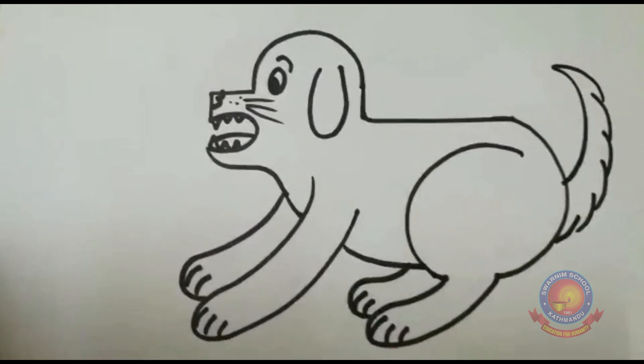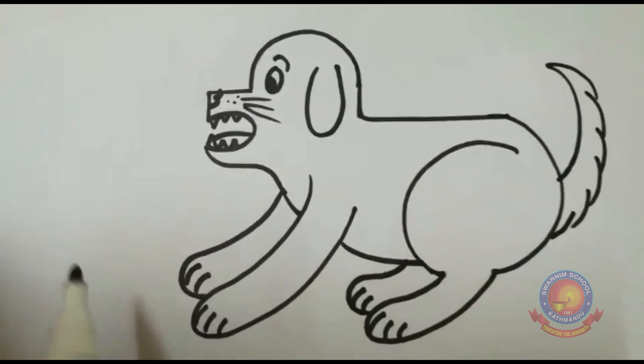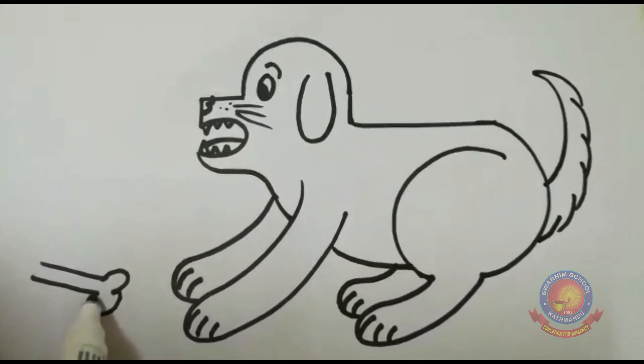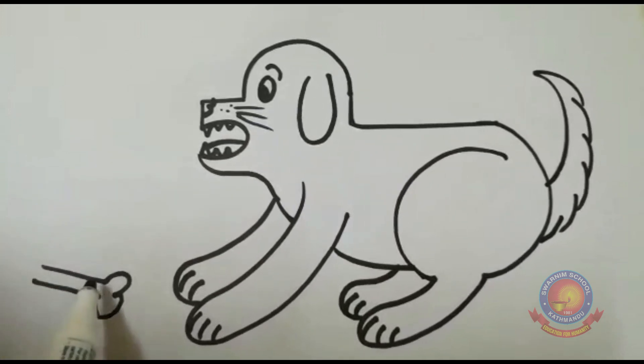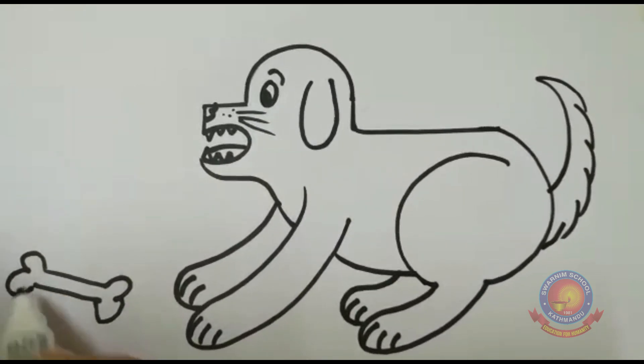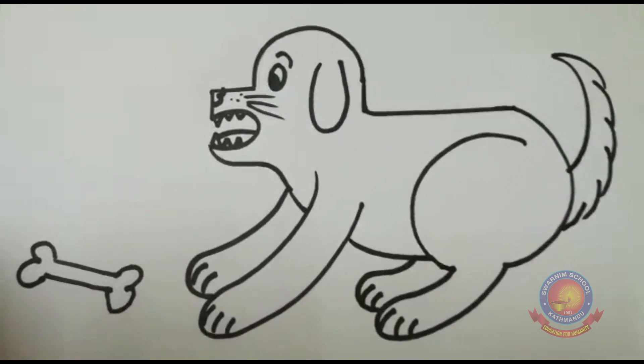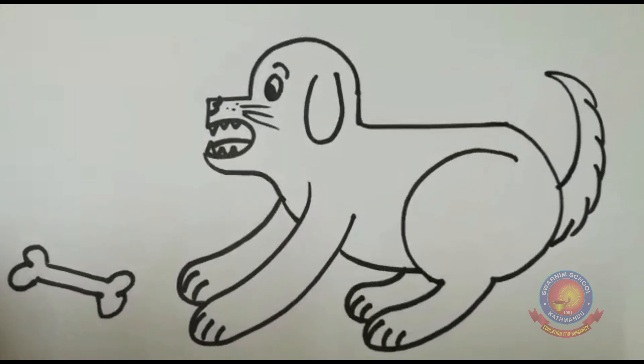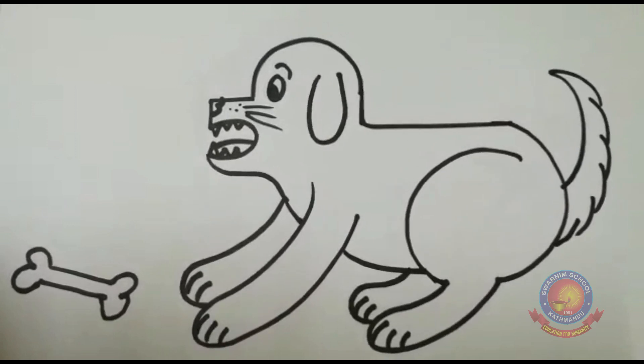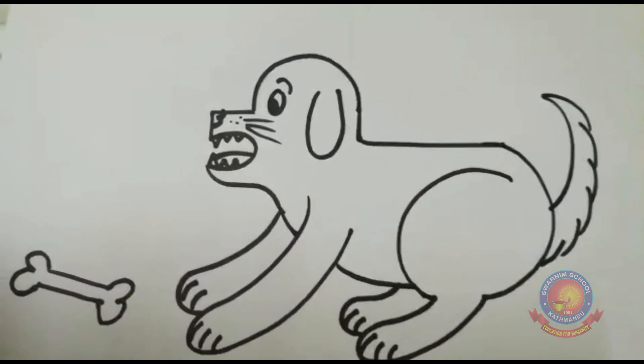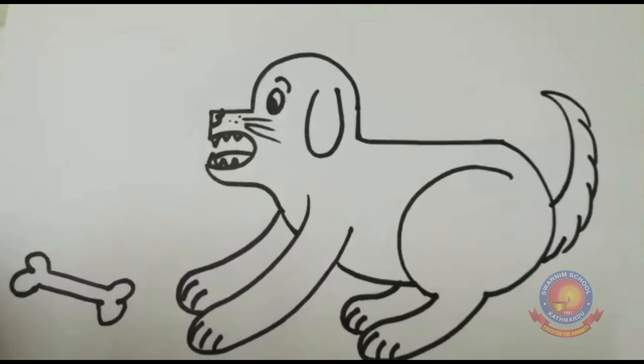Now in front of this dog, why don't we make one bone? How to make bone? Two sleeping lines like a dumbbell shape, and again dumbbell shape. Bone. Now this dog is really angry. What do you think? Maybe because he wants the bone.